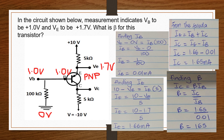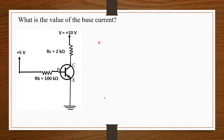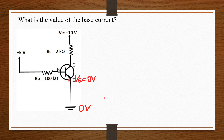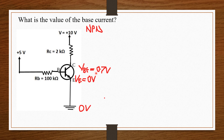That's it for that question. Next question: what is the value of the base current in this diagram? From the diagram, the earth portion gives 0 volts, and since there is no resistor between E and the earth portion, VE also equals 0 volts. Looking at the transistor, current moves from base to emitter, so the base is P and the emitter is N, making the collector N — an NPN transistor. The barrier potential VBE is therefore 0.7 volts.